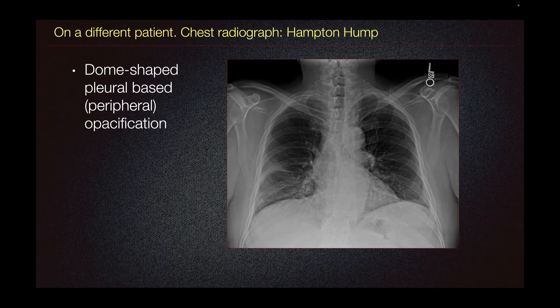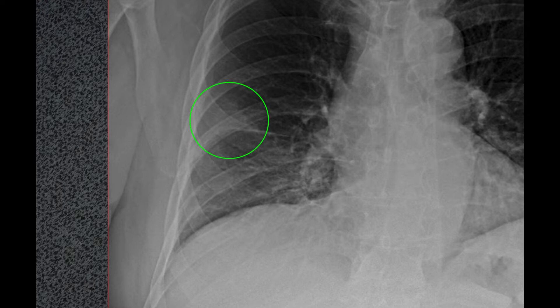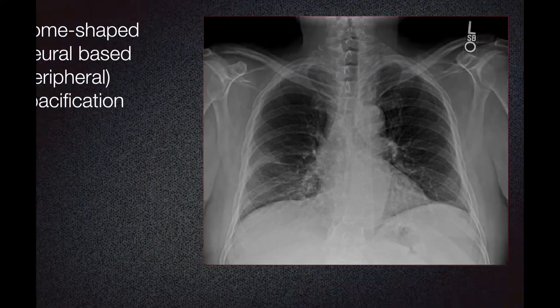On a different patient, the chest radiograph shows a described finding called Hampton's Hump. It is a dome-shaped pleural-based peripheral opacification that we can see here on the right mid-lung as a rounded opacification. This raises concern for pulmonary embolism. However, this finding is nonspecific and may represent an organizing pneumonia.